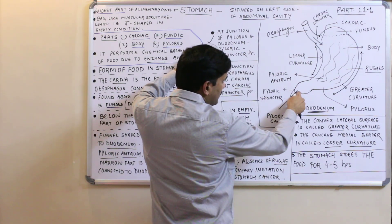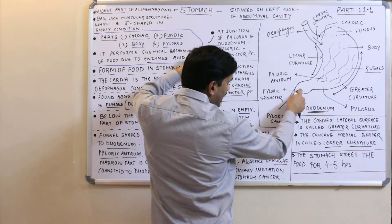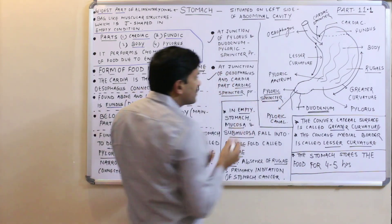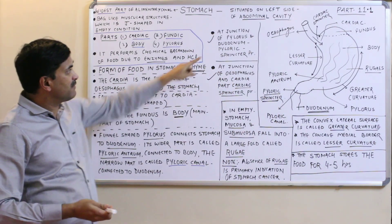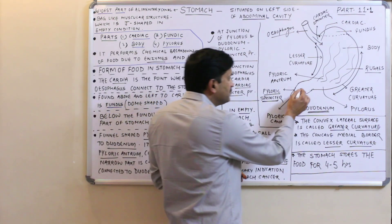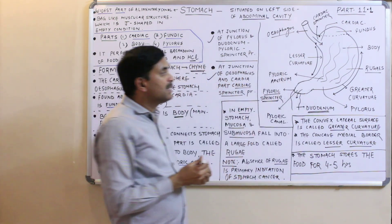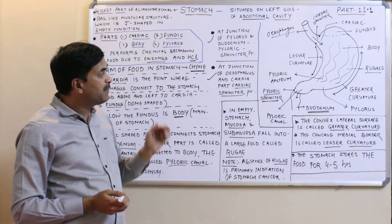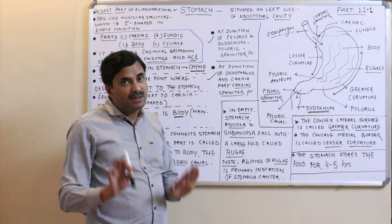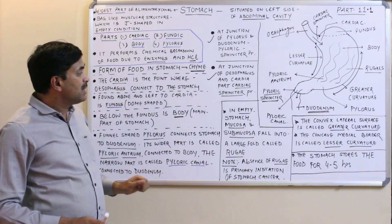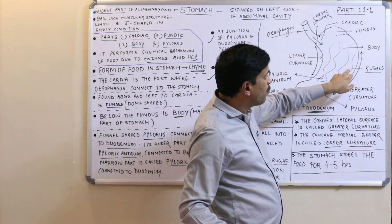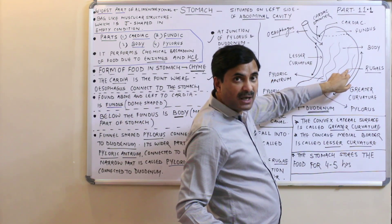At the junction of the pylorus and the duodenum, another valve is present called the pyloric sphincter. It allows food to move from the stomach to the duodenum but prevents the back flow of food from the duodenum to the stomach.